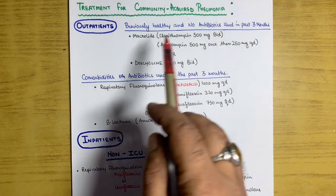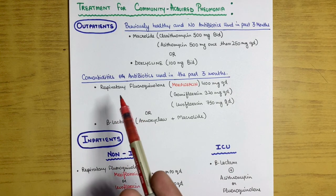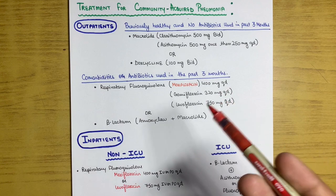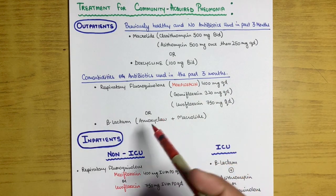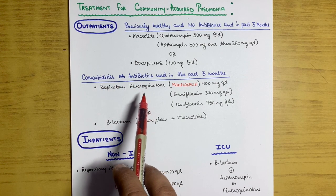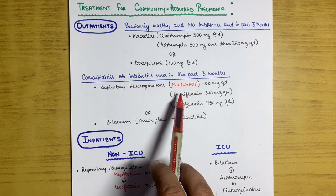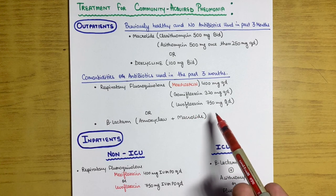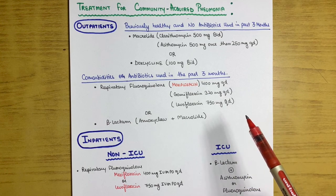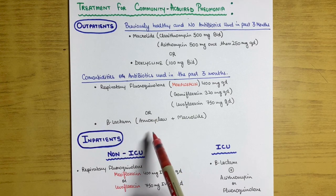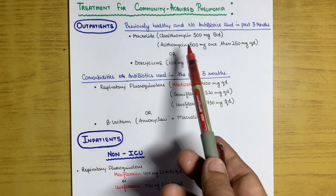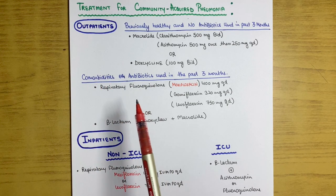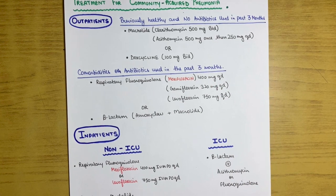For outpatients with comorbidities or who have used antibiotics in the past three months, respiratory fluoroquinolones are the drug of choice: moxifloxacin 400 mg once daily, gemifloxacin 320 mg once daily, or levofloxacin 750 mg once daily, given for 8 to 10 days. Alternatively, a beta-lactam such as amoxicillin-clavulanate plus a macrolide (clarithromycin or azithromycin) can be used.